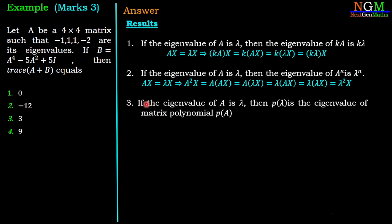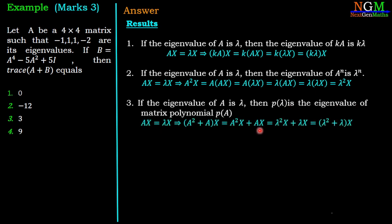Third result: if the eigenvalue of A is λ, then P(λ) is the eigenvalue of the matrix polynomial P(A). For example, if AX = λX, then (A² + A)X = A²X + AX = λ²X + λX = (λ² + λ)X. So A² + A has eigenvalue λ² + λ. In general, the matrix polynomial P(A) has eigenvalue P(λ).